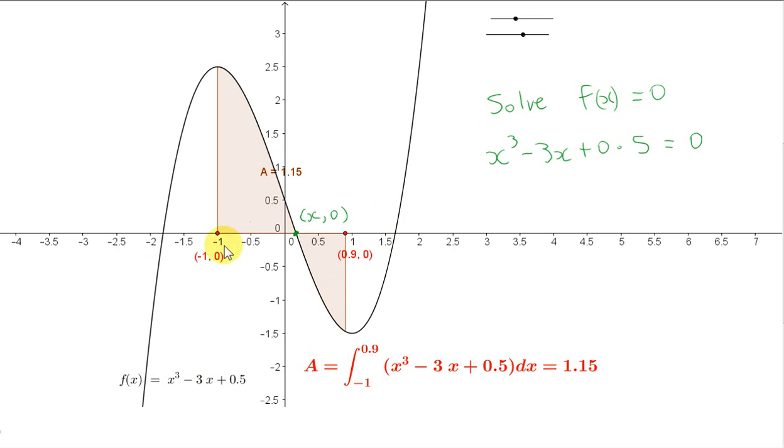That's because we need to actually consider two separate regions here rather than just one region. If we take one region from minus 1 to 0.9, this bit will come out to be positive. And this bit here will come out to be negative. So these will tend to cancel each other out. So this is not the area.